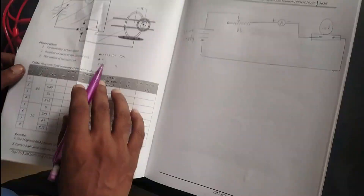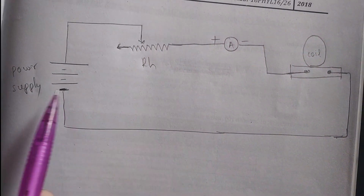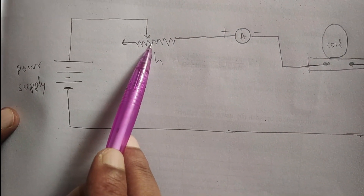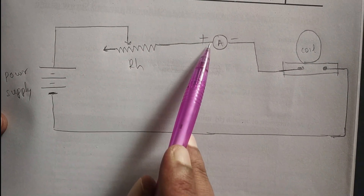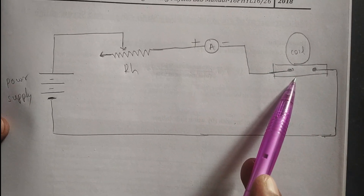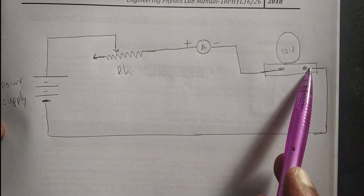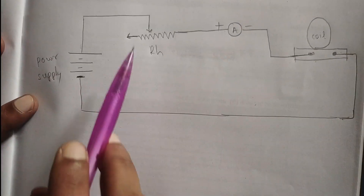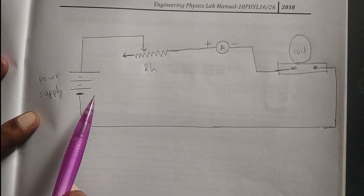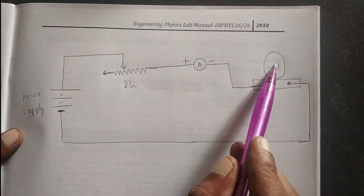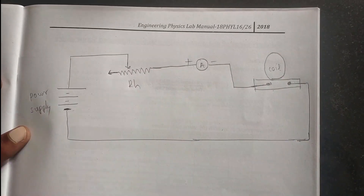Next, the procedure to conduct this experiment: one end of the power supply is connected to the upper end of the rheostat. The lower end of the rheostat is connected to one terminal of the ammeter; the other terminal goes to one terminal of the coil, and the other terminal of the circular coil connects back to the other end of the power supply. This is the circuit used to study magnetic field intensity at the center and along the axis of the circular coil.